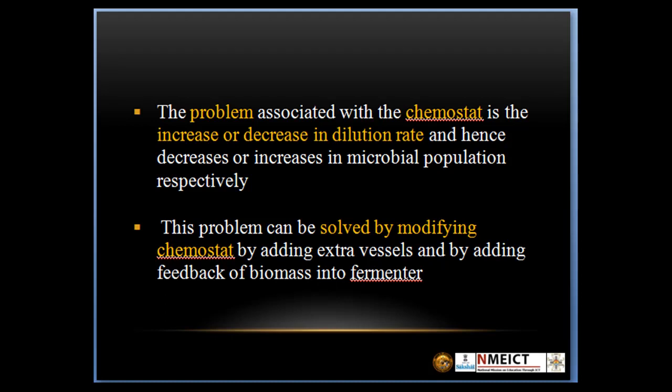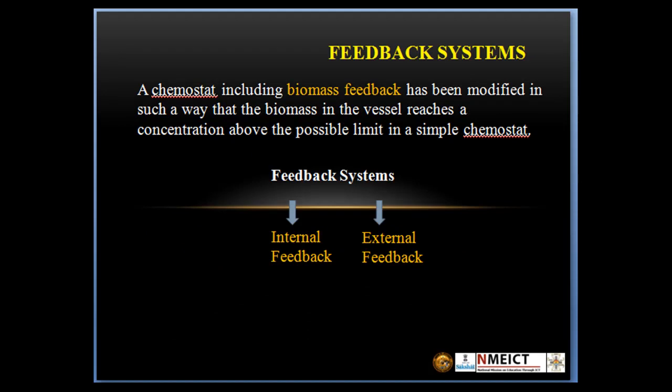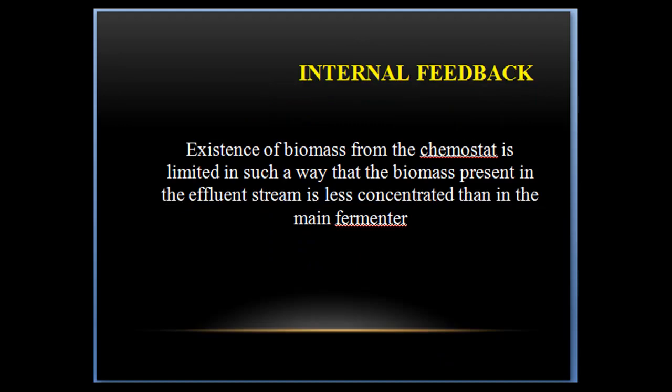The problem associated with the chemostat is the increase or decrease in dilution rate and hence the decrease or increase in microbial population respectively. This problem can be solved by modifying the chemostat by adding extra vessels and adding feedback of biomass into the fermenter. A chemostat including biomass feedback has been modified such that the biomass in the vessel reaches a concentration above the possible limit in a simple chemostat. Feedback systems are of two types: internal feedback system and external feedback system. In the internal feedback system, the exit of biomass from the chemostat is limited such that the biomass present in the effluent is less concentrated than in the main fermenter. In the external feedback system, biomass is separated from the effluent by processes such as sedimentation or centrifugation, and a portion of the concentrated biomass is returned to the growth vessel.